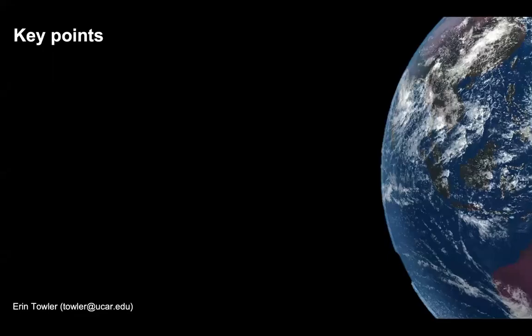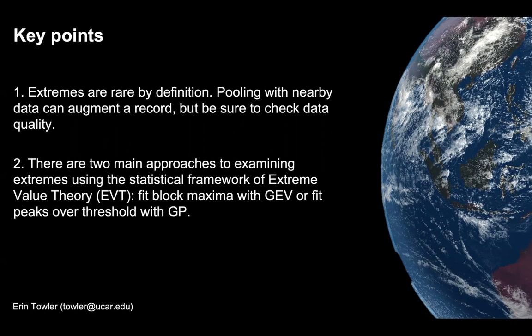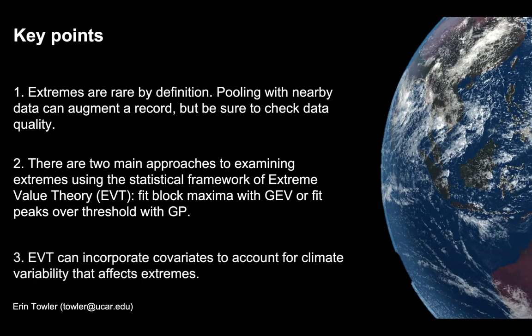To summarize, a couple of key points: first, extremes are rare by definition, so pooling with nearby data can augment a record or provide context, but we also want to check our data quality to ensure it's a real event and not due to observational errors. There are two main approaches — fitting block maxima with GEV or fitting peaks over threshold with GP — and each has advantages and disadvantages. Finally, EVT can incorporate covariates to account for climate variability that affects extremes. Thank you for listening and feel free to reach out if you have any questions.